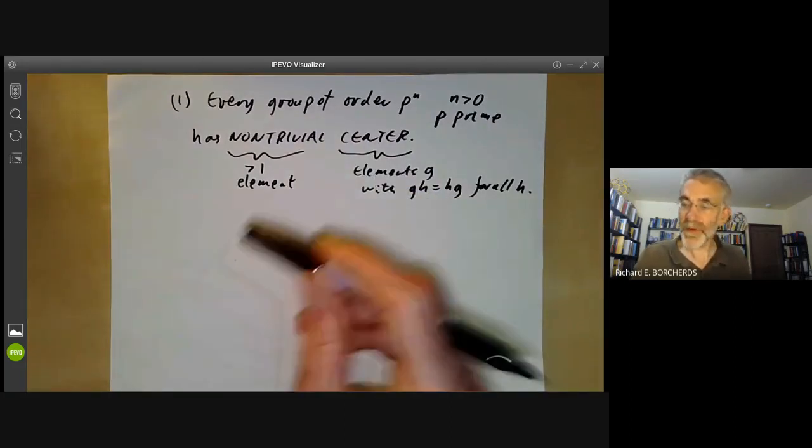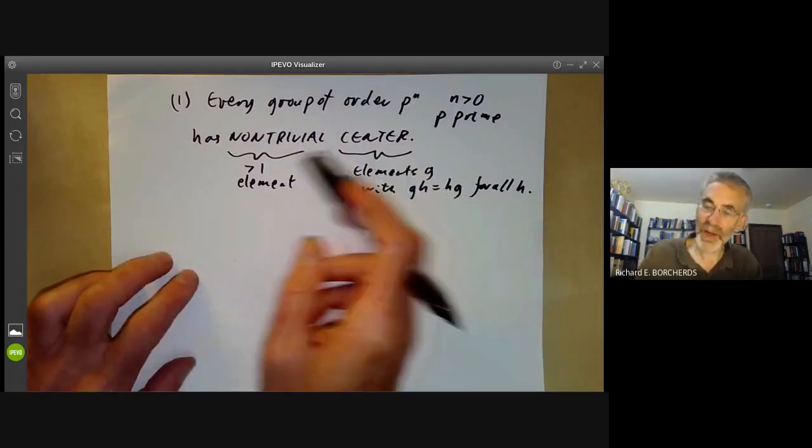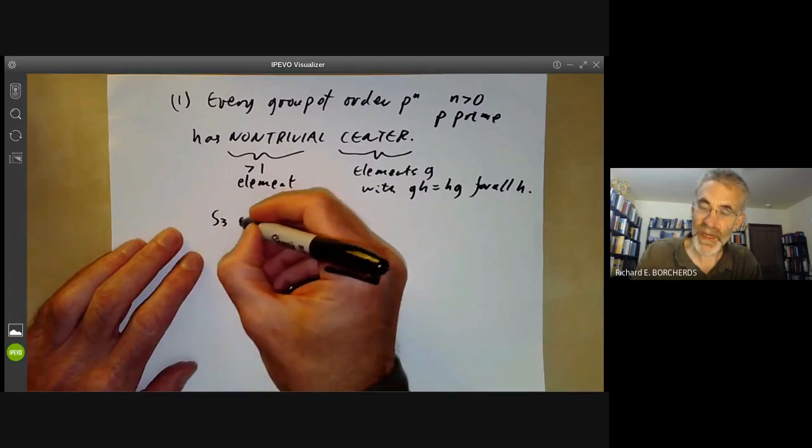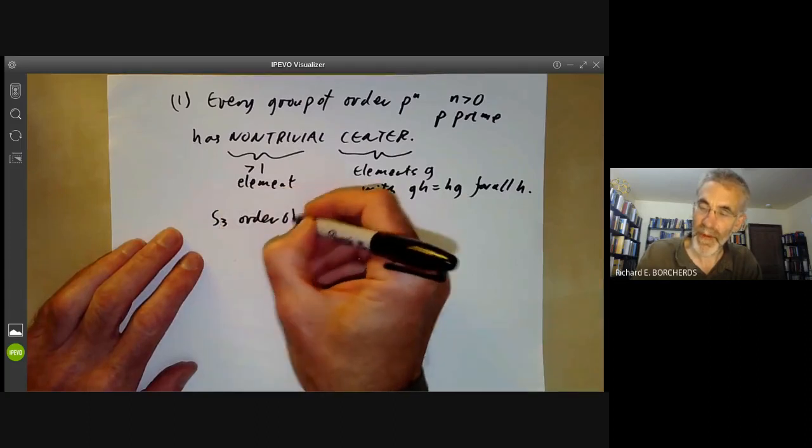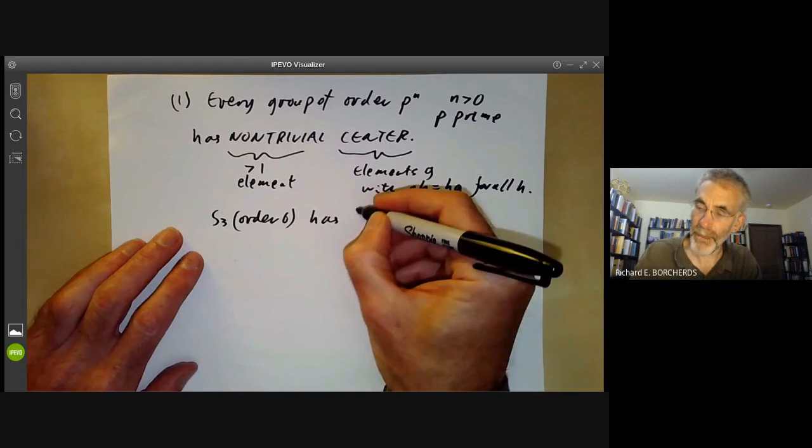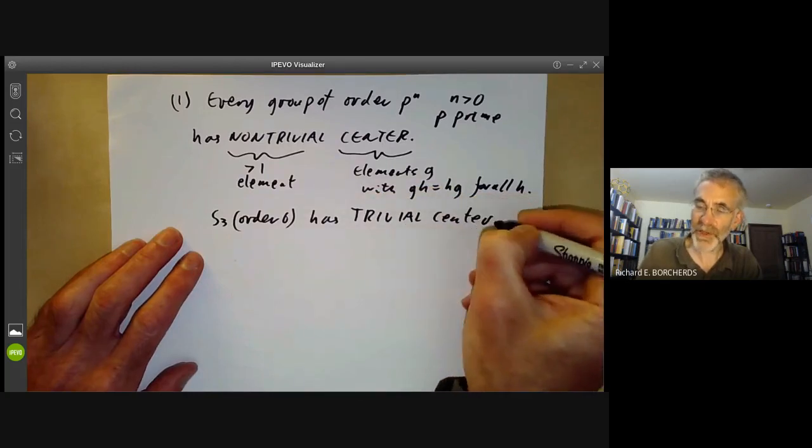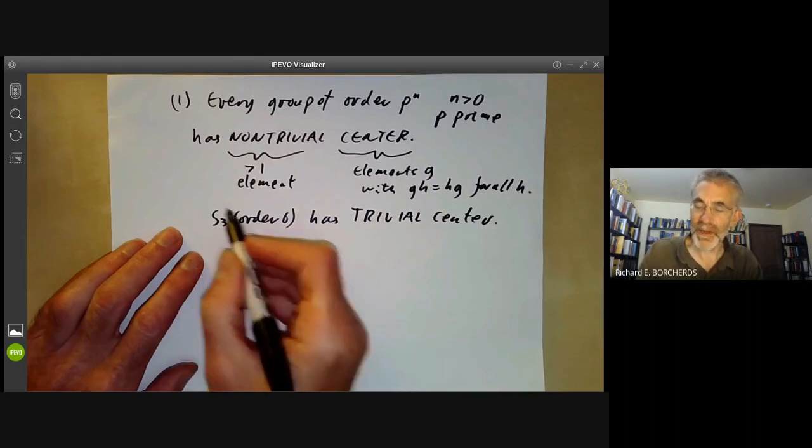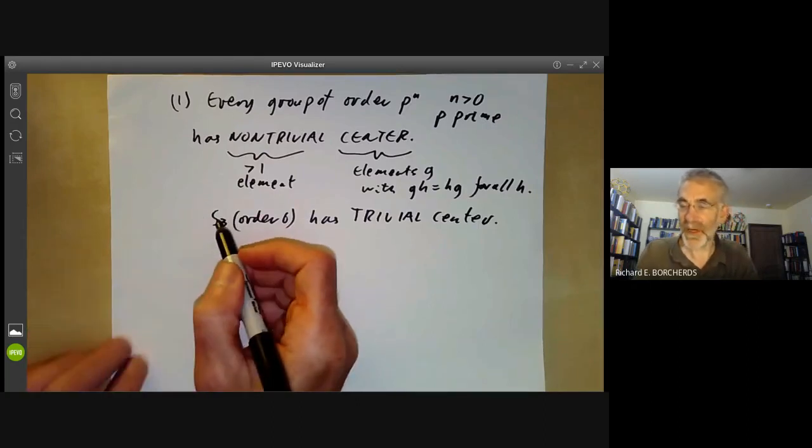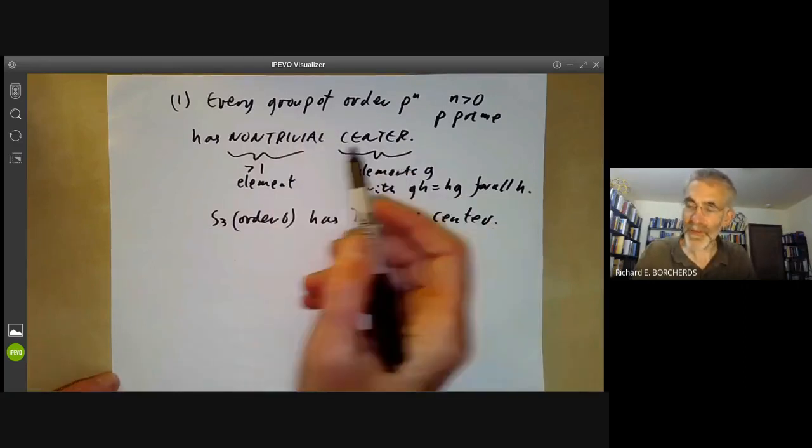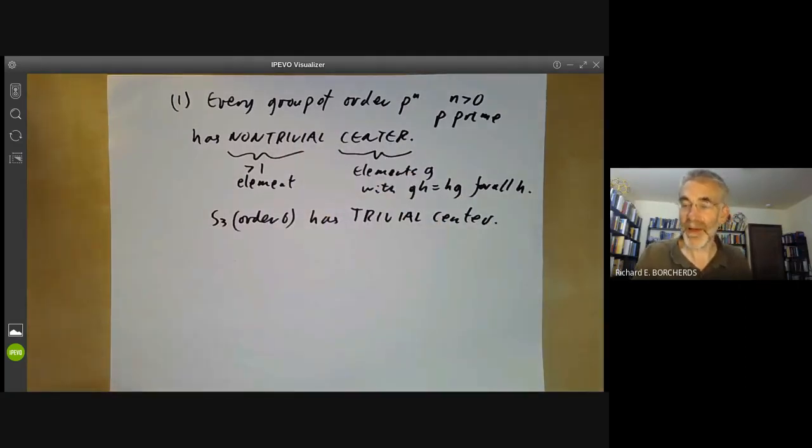So far, most of the groups we've had so far have had a non-trivial centre. If you look at the group S3 of order 6, the centre is trivial. So for groups that are not of prime power order, this one is order 6, for example, in general, they don't necessarily have anything in the centre apart from the identity element.